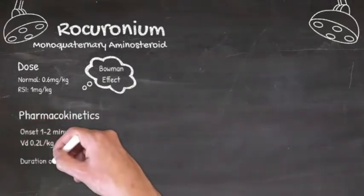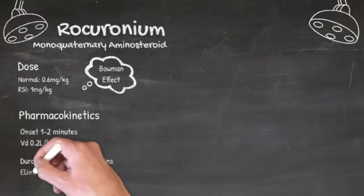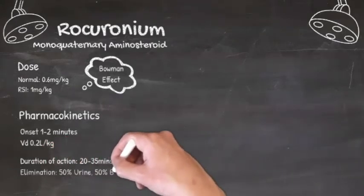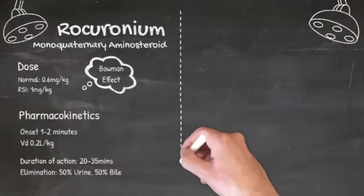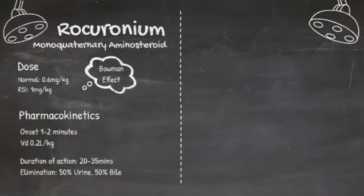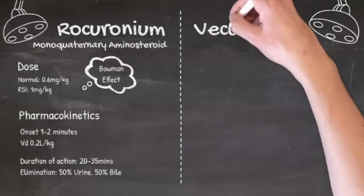It has a very small volume of distribution. It's eliminated in the urine and bile in roughly equal proportions with a duration of action of 20 to 35 minutes. You can of course use neostigmine or sugammadex as reversal agents which we'll look at separately in more detail later in this learning package.